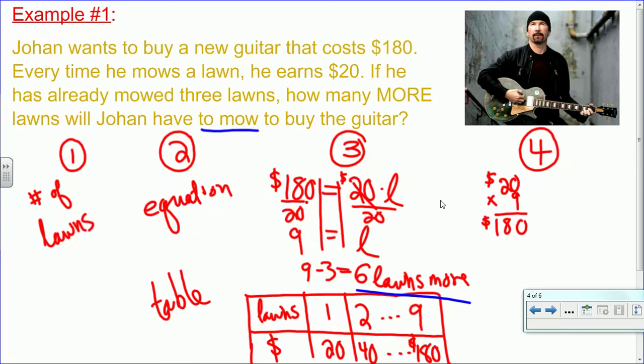If you're drawing a table, you might split it into two separate rows, and the top will tell you how many lawns he's mowed, and the bottom will tell you how many total dollars he's earned. So if he mows one lawn, that's $20. Once he mows two lawns, that's another $20 for a total of $40. And you could fill in the entire table until you found out that 9 lawns would get you $180. Again, it's important to understand the question and understand that if he's already mowed 3 lawns, and he needs 9 total, that's 6 lawns more he needs to mow.